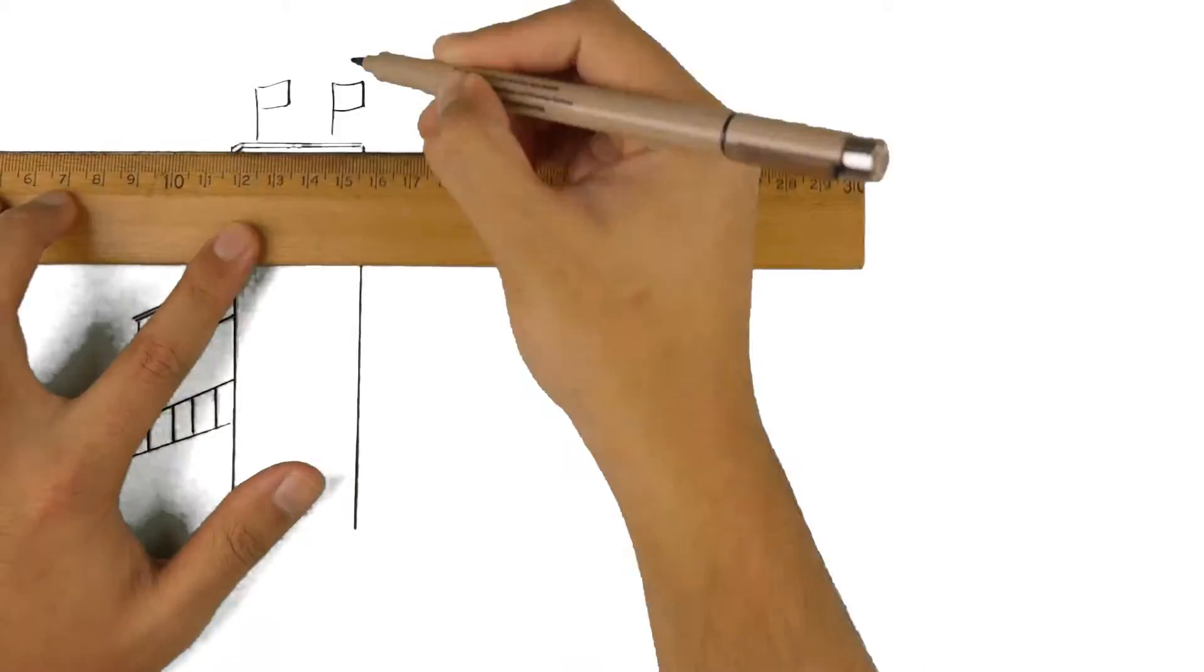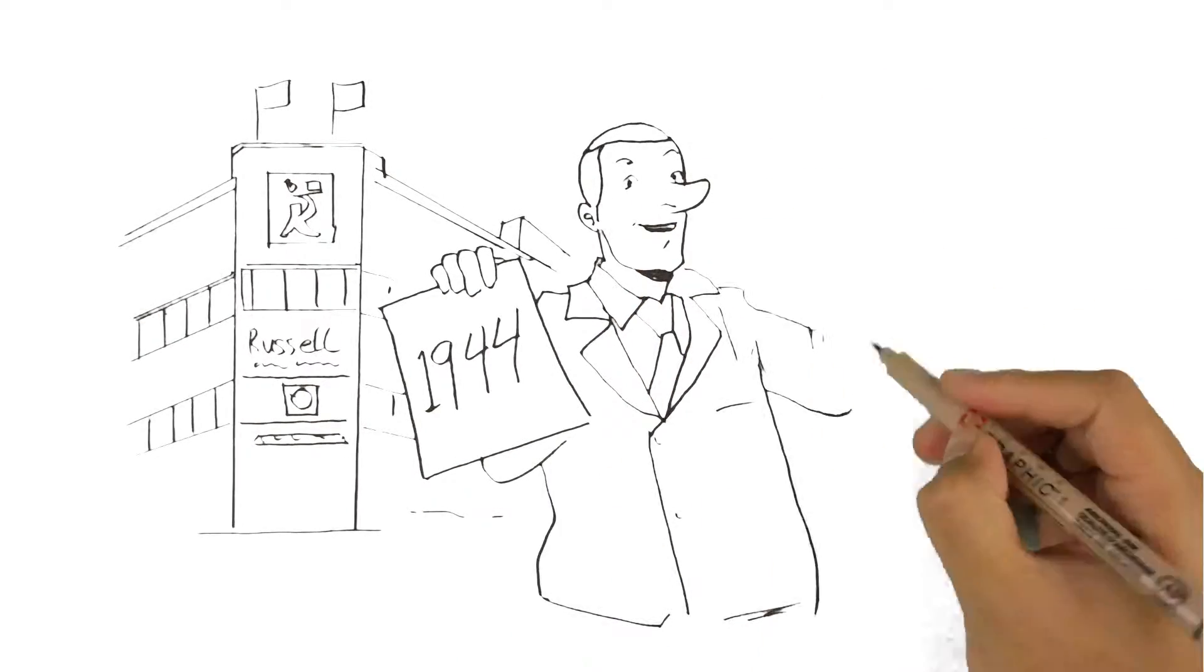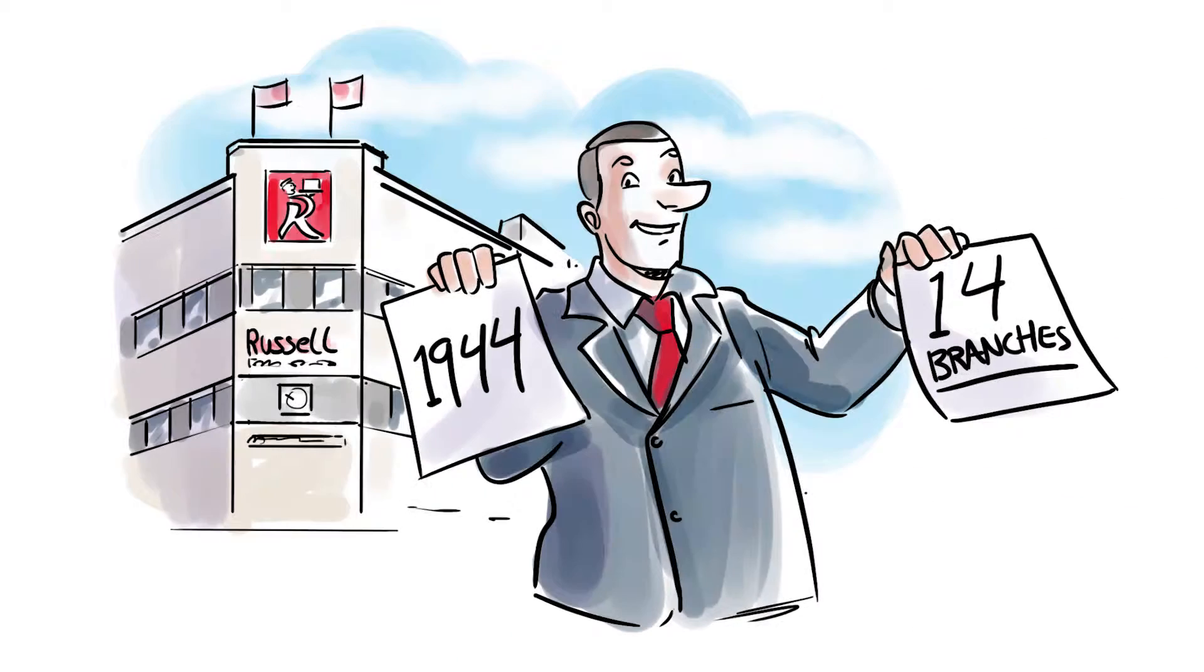Providing service since 1944, Consumer Choice Award winner Russell Food Equipment is Canada's national leader in food service equipment and sales with 14 branches coast-to-coast.